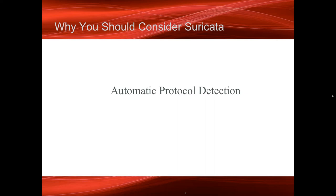Automatic protocol detection: some of those HTTP C2 examples I showed earlier — the best way to evade most existing IDSes was to just hop to an odd port, like port 65,000, and change it daily. Because the way HTTP is normalized in most other engines, you have to give it the ports to normalize on. With Suricata, it makes a verdict after the first couple of packets — 'this is an HTTP stream' — and then applies all the HTTP rules to that, regardless of the port. This means we can write one rule for an HTTP-based command and control protocol and it'll hit on any port up and down the scale. It's also a performance gain, because we're not trying to normalize traffic that's not HTTP just because it's on a port we think HTTP might be on.